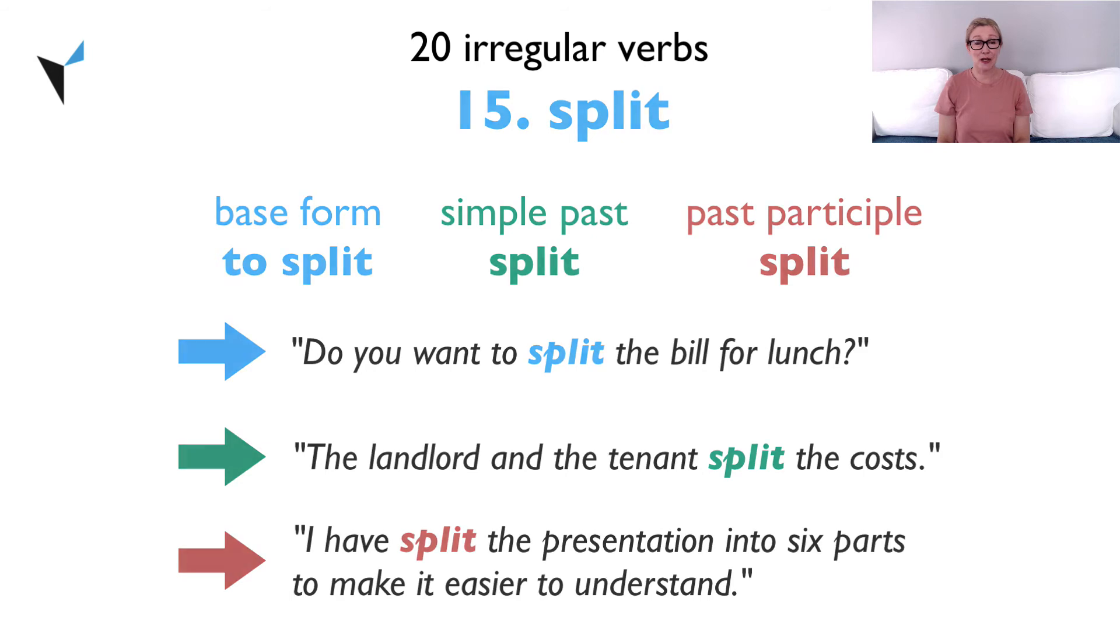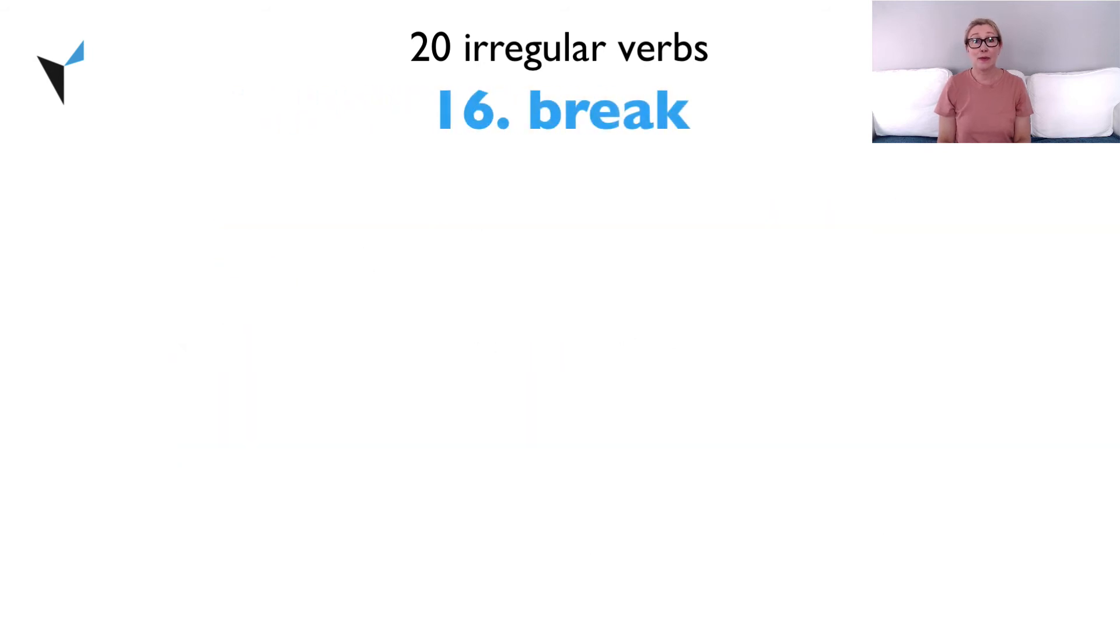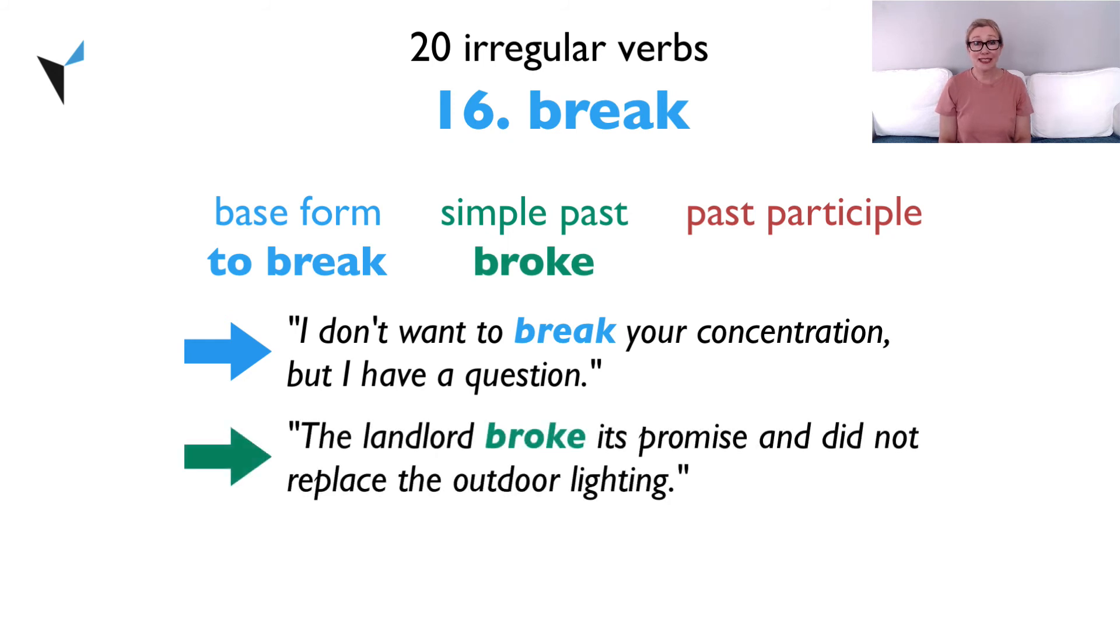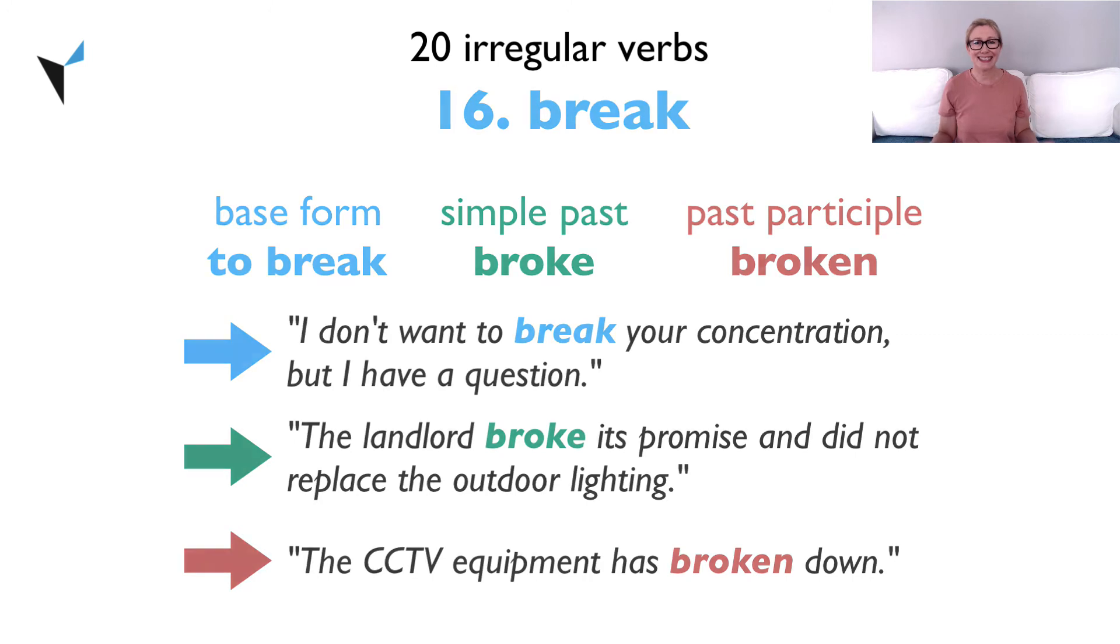Verb 16, break. The base form is to break. I don't want to break your concentration, but I have a question. The simple past is broke. The landlord broke its promise and did not replace the outdoor lighting. And the past participle is broken. The CCTV equipment has broken down.